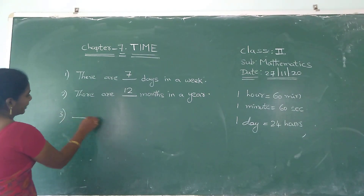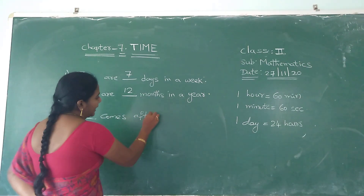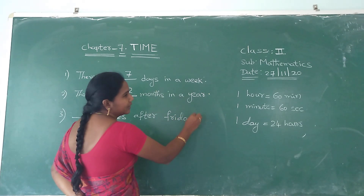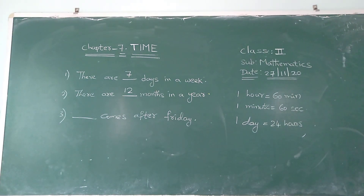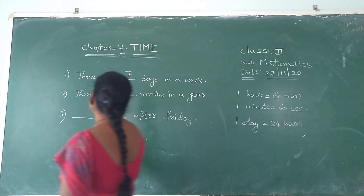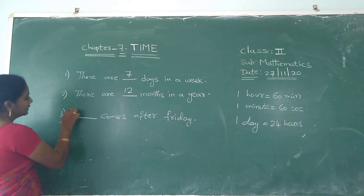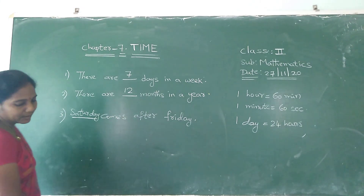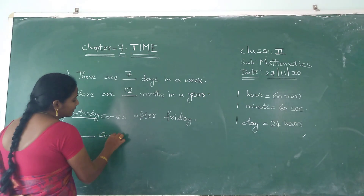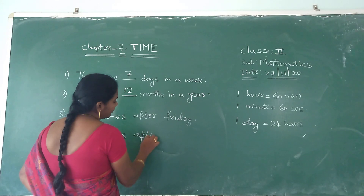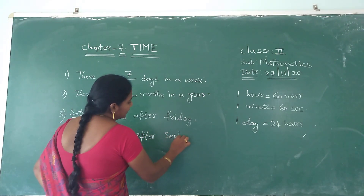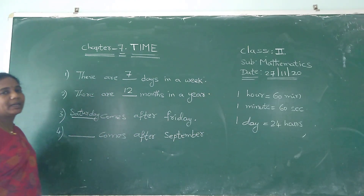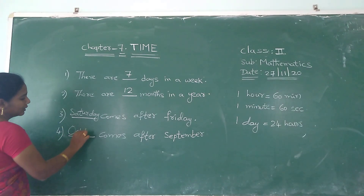Dash comes after Friday. After Friday, which day will you get? You will get Saturday. Friday after Saturday. Next: dash comes after September. After September, which month will you get? September — after September you will get October month.